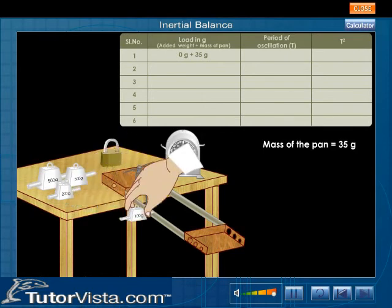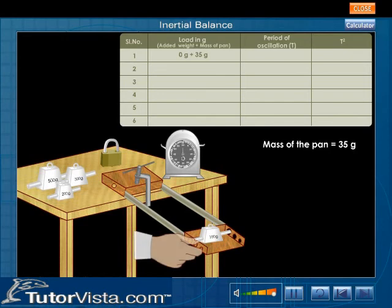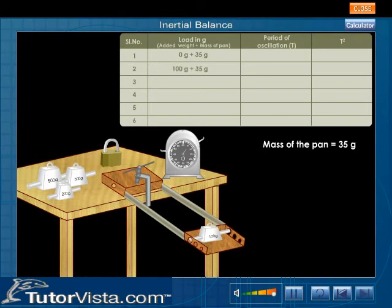Now place a body of 100 grams in the groove and pull the board B2 horizontally a little to one side and leave it. Note the time period of oscillation. Repeat the experiment by placing bodies of 200 grams, 300 grams, and 500 grams.